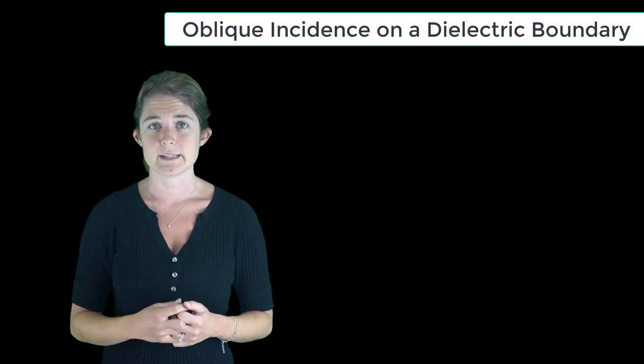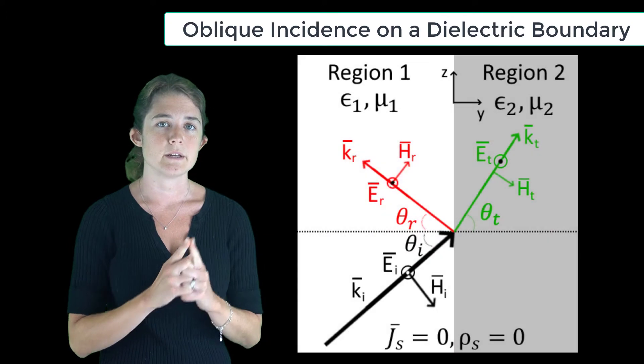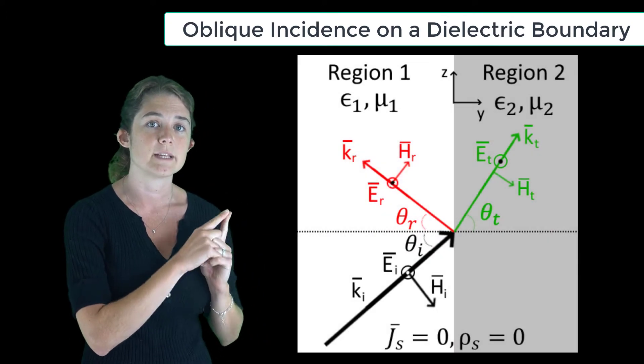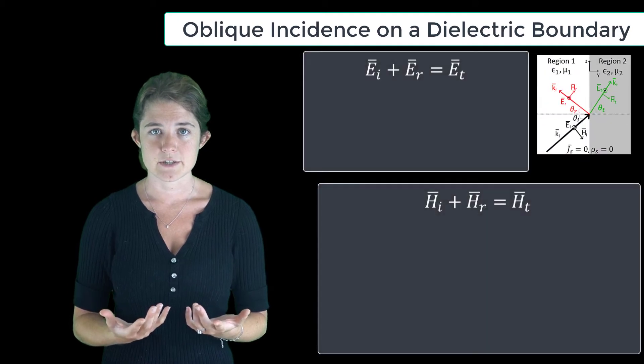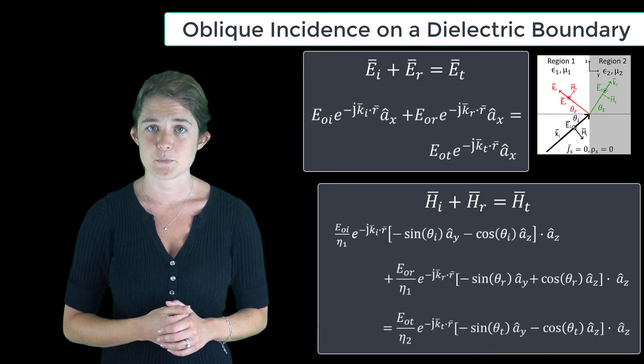Let's look first at oblique incidence where the incident ray is oriented so that the electric field is perfectly tangential to the boundary. We'll apply the boundary conditions using trigonometry to define the k vectors for each wave